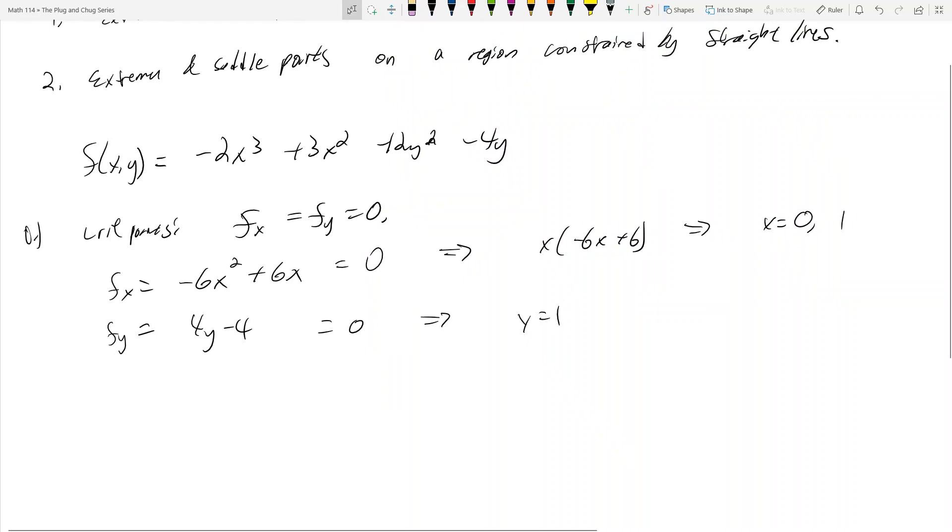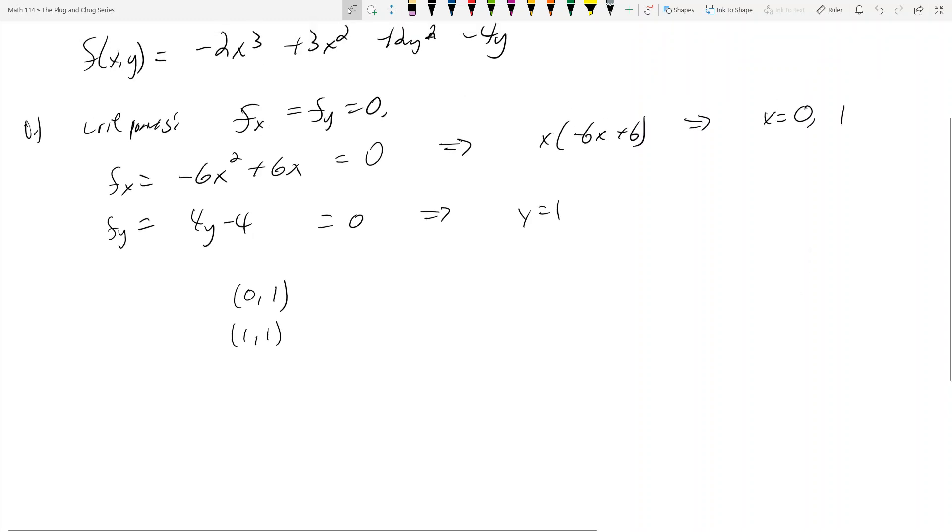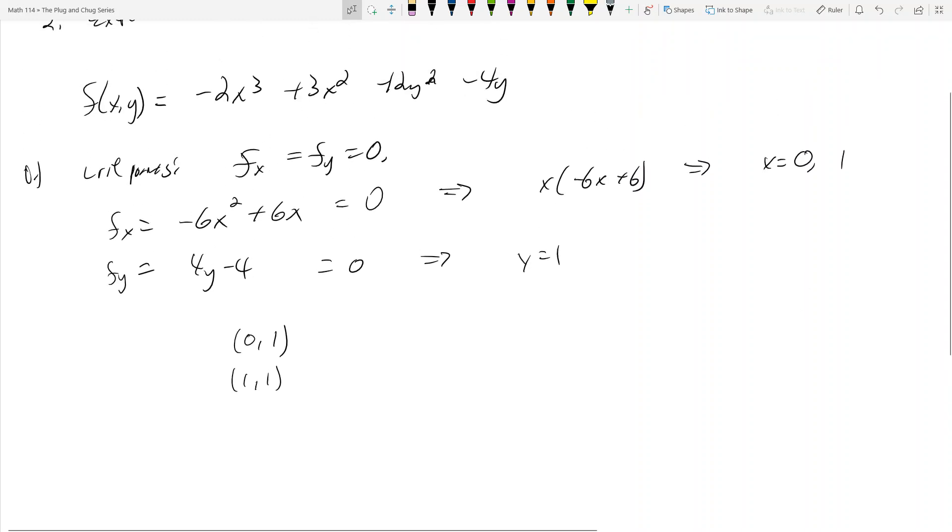So that means I have two critical points. And what are they? You just have to pair them up. If x is 0, we got x is 0 and y is 1. And then we got x is 1 and y is 1. So those are my two critical points. One question I get is, how do you get better at finding critical points? You need to case it like this, play around with the x variable and see what it can be, play around with the y and see what it can be.